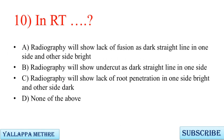Question 10: In RT — A. Radiography will show lack of fusion as a dark straight line on one side and the other side bright. B. Radiography will show undercut as a dark straight line on one side. C. Radiography will show lack of root penetration with one side bright and the other side dark. D. None of the above.